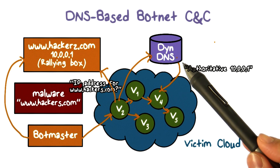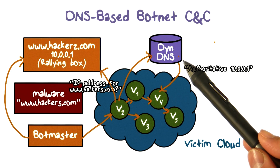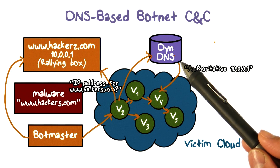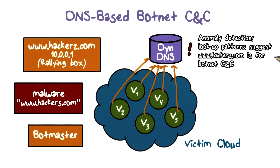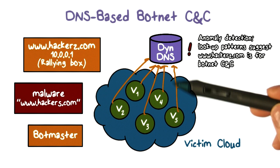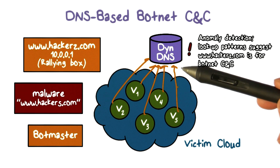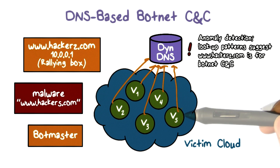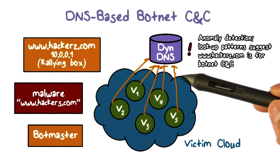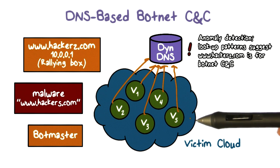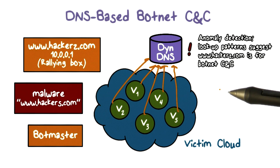All he needs to do is log into the dynamic DNS provider and change the mapping so that hackers.com points to the new IP address. If we can detect that hackers.com is used for botnet C&C, then we can detect that any machine that connects to it is a bot. But the question is, how do we know that hackers.com is used for botnet C&C? It turns out that the way bots look up a domain would suggest this, and it would be different from a machine looking up a web server because of legitimate user activities.